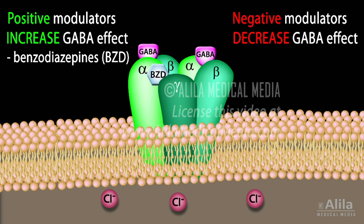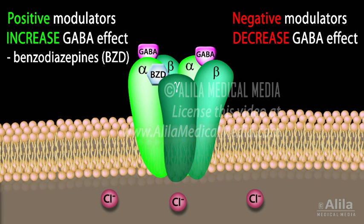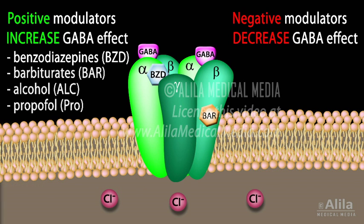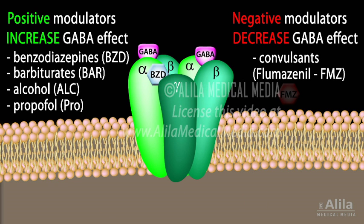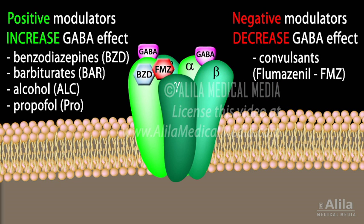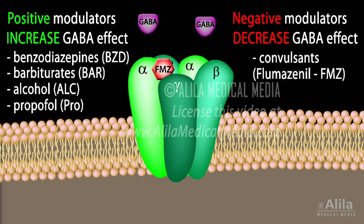Other positive modulators include barbiturates, alcohol, and propofol, among others. Examples of negative modulators are convulsants such as flumazenil. Flumazenil reverses the effects of benzodiazepines by competing with them at the same binding site on GABA-A.